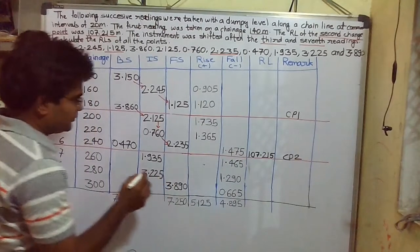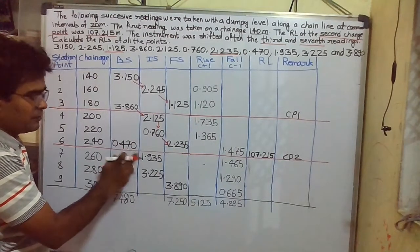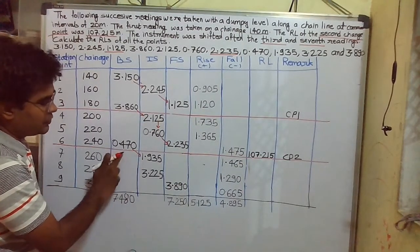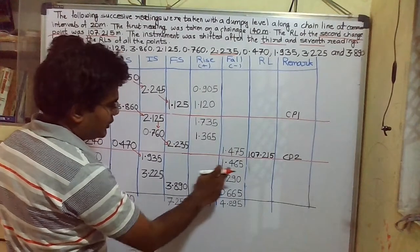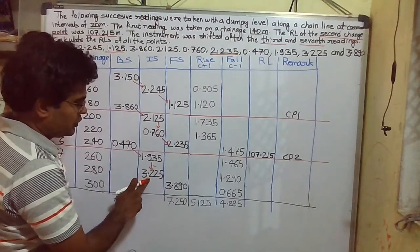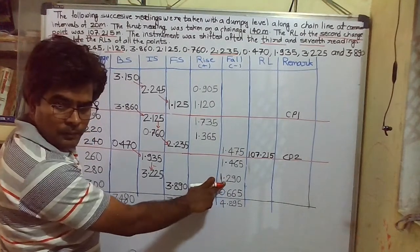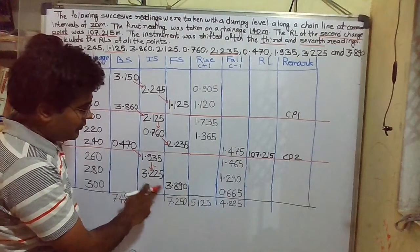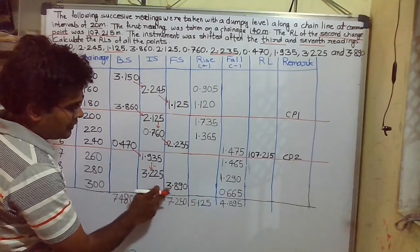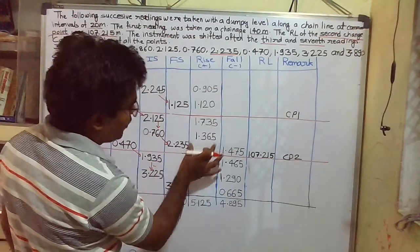After the second change point, we compare the back sight with the next reading. The reading is increasing again, so there is a fall: 0.470 minus 1.935 gives minus 1.465, written in the fall. Then 1.935 minus 3.225 gives minus 1.290, also a fall. Finally, 3.225 minus 3.890 gives minus 0.665, again written in the fall column.